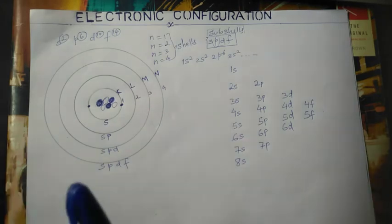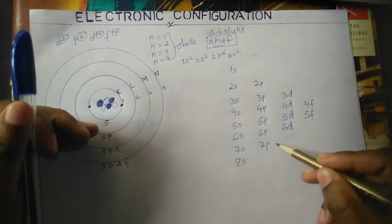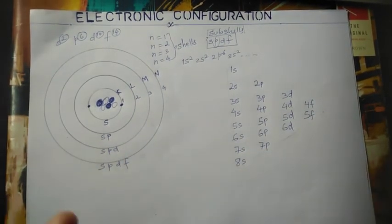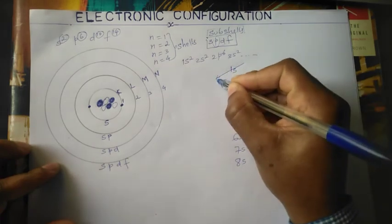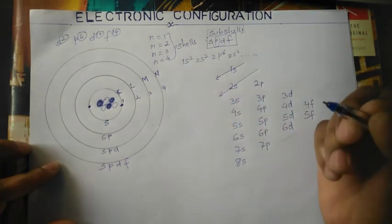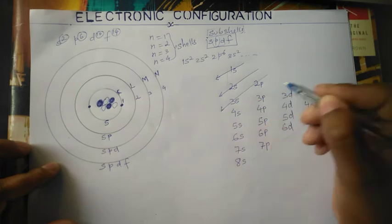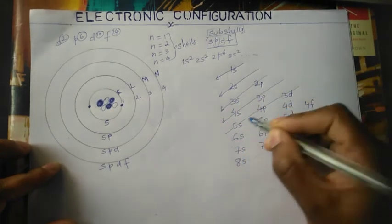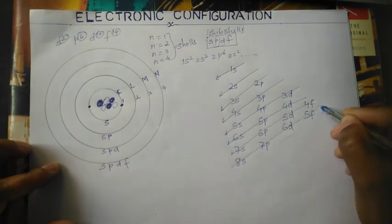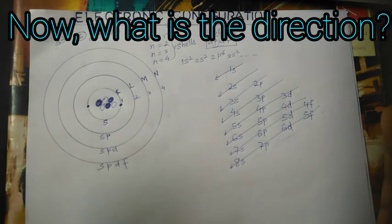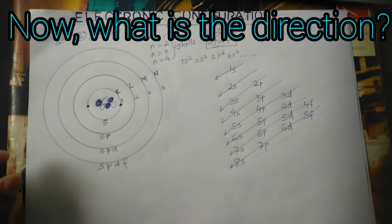The next step is to draw arrows to show the energy levels this diagram follows. The diagram looks like a triangle, and the arrows show the order in which you fill the subshells. This is the same diagram you see elsewhere, but this approach uses a very simple step-by-step trick. The arrows are just for organization — they don't show direction, only the order to follow.